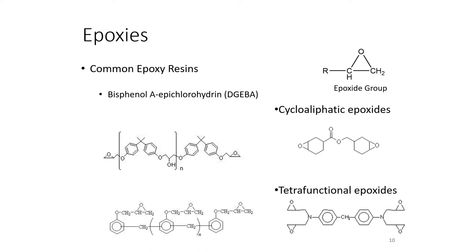Epoxy resins have a well-established record in a wide range of composite parts, structures and concrete repair. A major benefit of epoxy resins over unsaturated polyester resins is their lower shrinkage and better mechanical strength. Epoxy resins are used primarily for fabricating high-performance composites with superior mechanical properties, resistance to corrosive liquids and environments, superior electrical properties and good performance at elevated temperatures. However, epoxy resins do not have particularly good UV resistance.